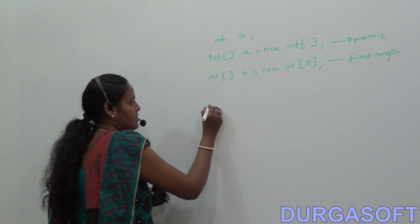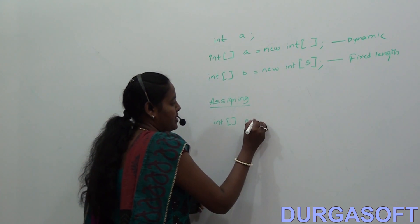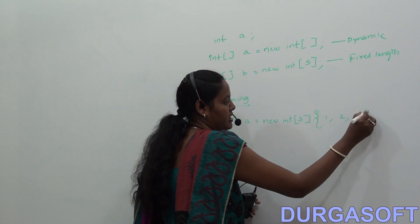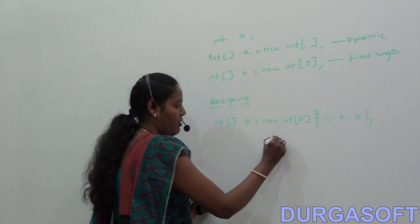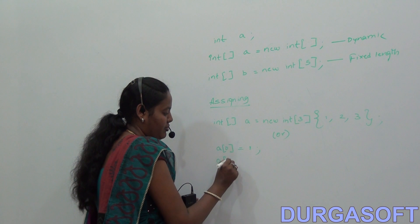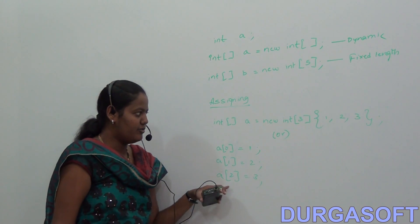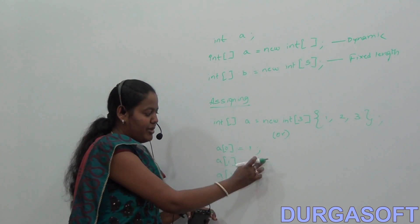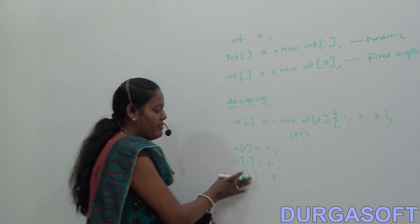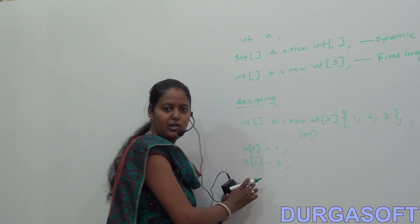After declaration of an array, you have to assign the values. You can assign values directly or in multiple steps. For example: int array name equals new int, and you can write the elements in a single line. Or based on the index: array[0] = 1, array[1] = 2, array[2] = 3. You cannot use array[3] because the length is 3, so only indices 0, 1, and 2 are valid. If you pass array[3], an index out of range exception will occur. If you do not assign a value to an element, it will default to 0.